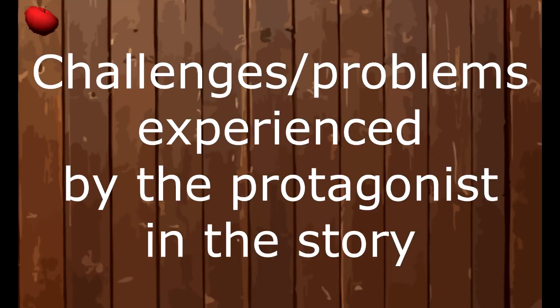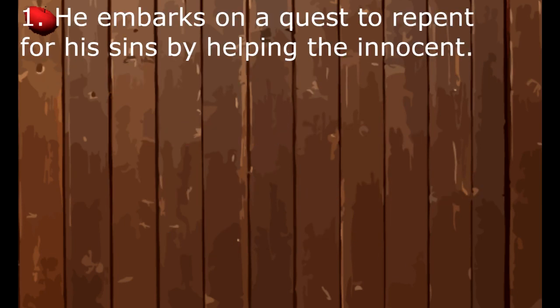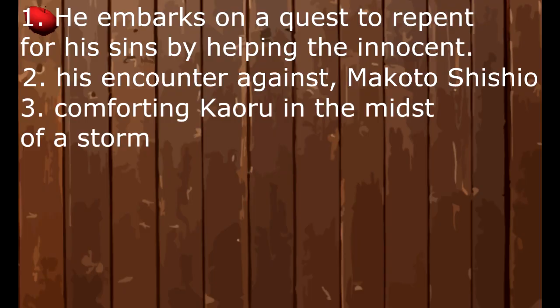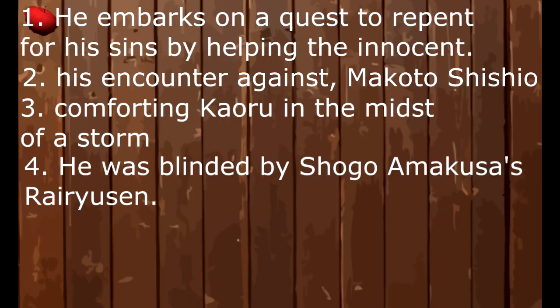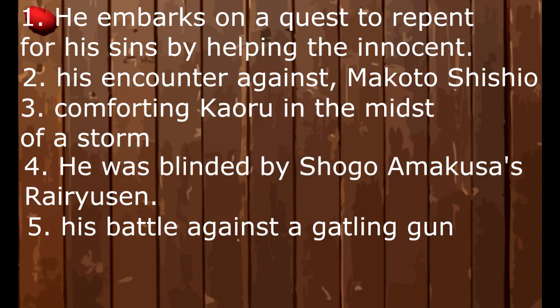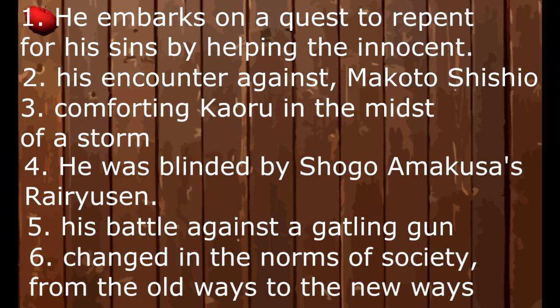Our protagonist Kenshin Himura experienced the following challenges in the story: 1. He embarks on a quest to repent for his sins by helping the innocent. 2. His encounter against Makoto Shishio. 3. Comforting Kaoru in the midst of a storm. 4. He was blinded by Shogo Amakusa's Rai Ryusen. 5. His battle against a Gatling gun. 6. The change in the norms of society from the old ways to the new ways.